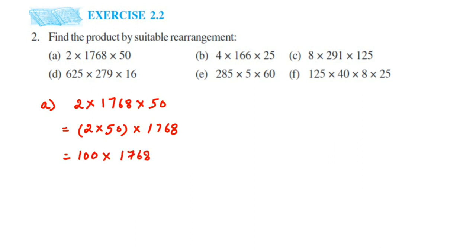Now we just need to put zeros — whenever you're multiplying any number by 100, 1000, or 1 lakh, you just put those zeros at the end. If multiplying by 200 or 300, you also multiply by 2 or 3. Here we have 1, so 1 × 1768 = 1768, and 100 has two zeros, so the answer is 1,76,800. That's the first one.